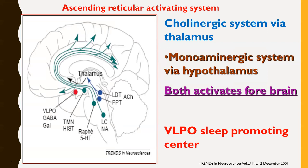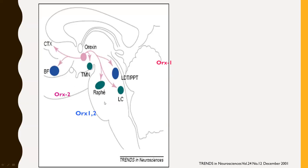Coming back to the reticular activating system: we have the cholinergic system, which acts via the thalamus and activates the forebrain, and the monoaminergic system, which acts via the hypothalamus. We have VLPO, which contains sleep-promoting neurons. From a behavioral perspective, the sustenance of behavioral state is very important — sleep should not pathologically intrude into wake, and wake should not intrude into sleep. There should be a stable behavioral state at any given point of time.